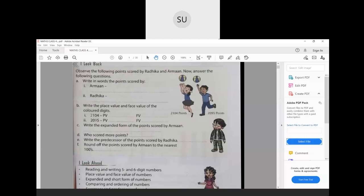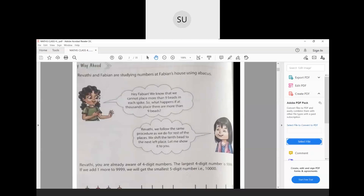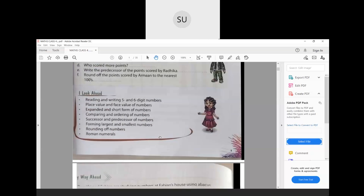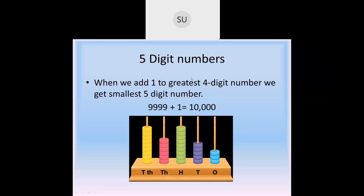So this was what you will have done in 4th standard. Now let's start with the topic for standard 5, or grade 5. We are going to study what are 5-digit numbers and 6-digit numbers. When you add 1 to the greatest 4-digit number, we get the smallest 5-digit number. The greatest 4-digit number is 9999, and 9999 plus 1 is 10,000 — which is the smallest 5-digit number.